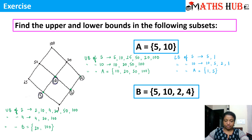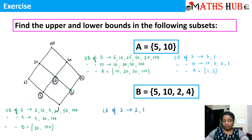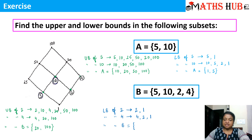Now let's check the lower bounds. Lower bounds of 5 and 10 are already written. The lower bounds of 2 are: 2 and 1. The lower bounds of 4 are: 4, 2, and 1. For the lower bounds of set B, only 1 is common to all four elements. So the lower bounds of set B contain only {1}.